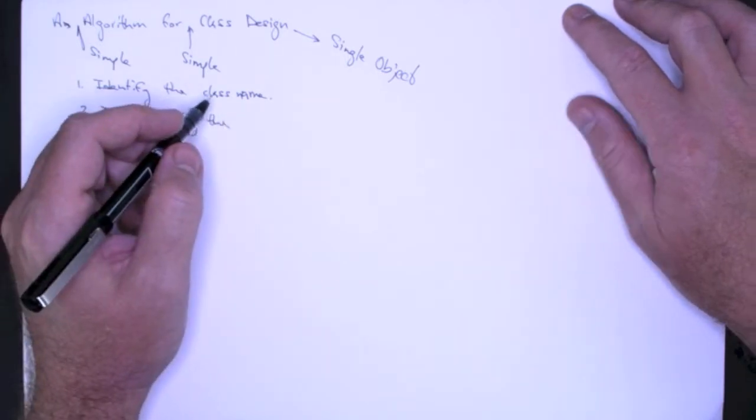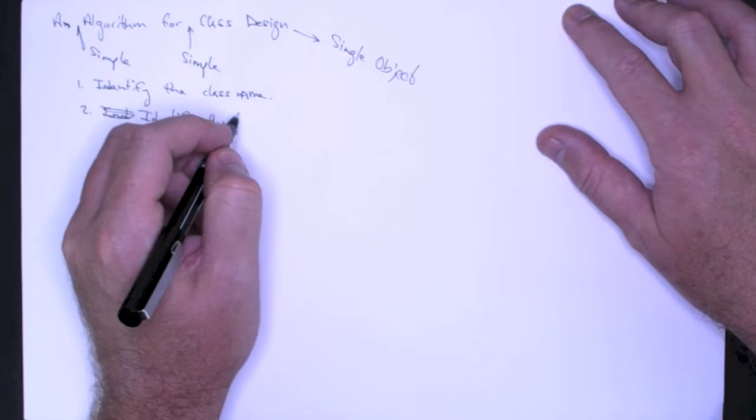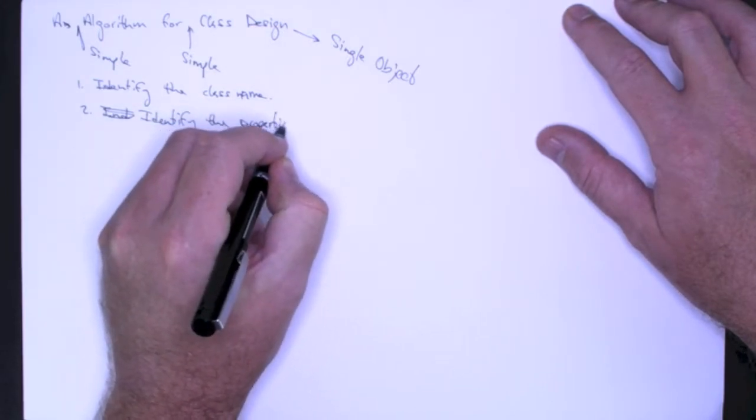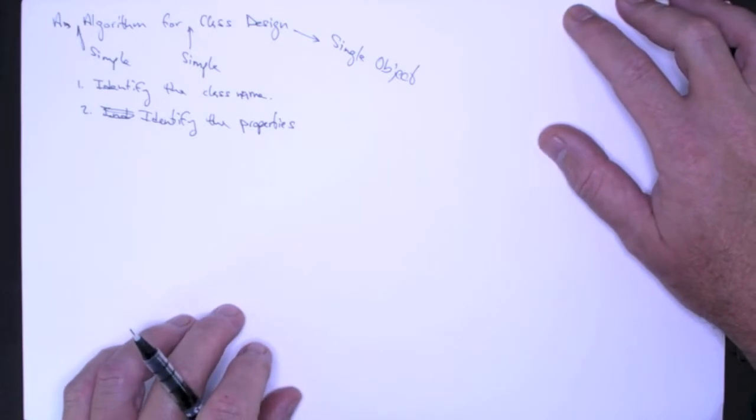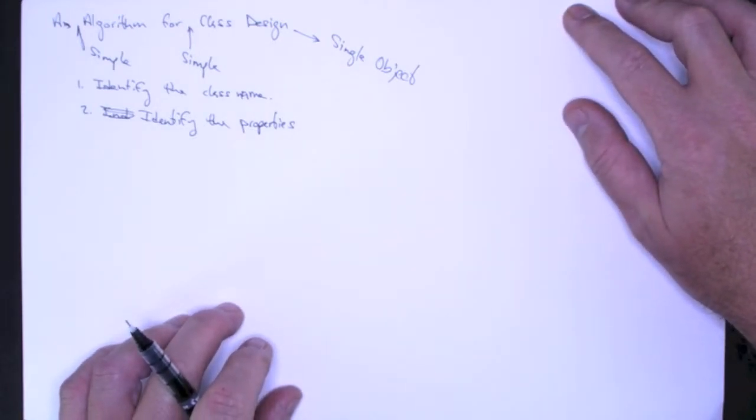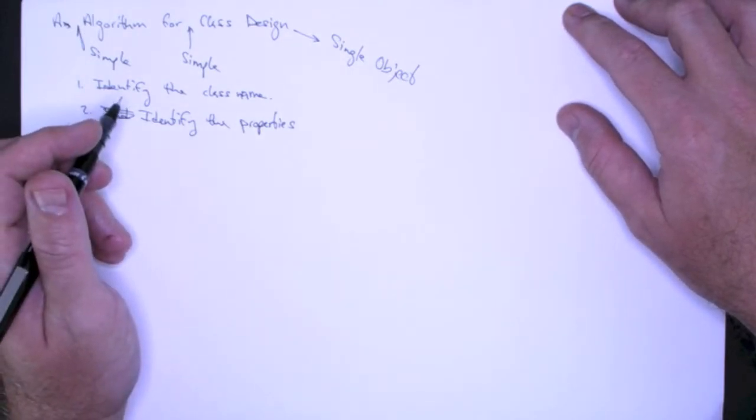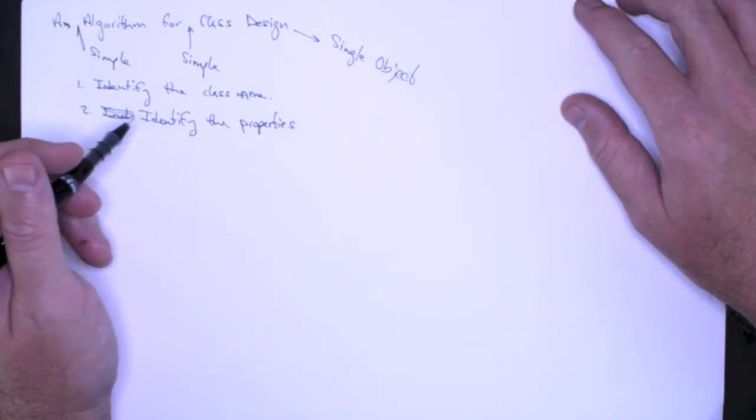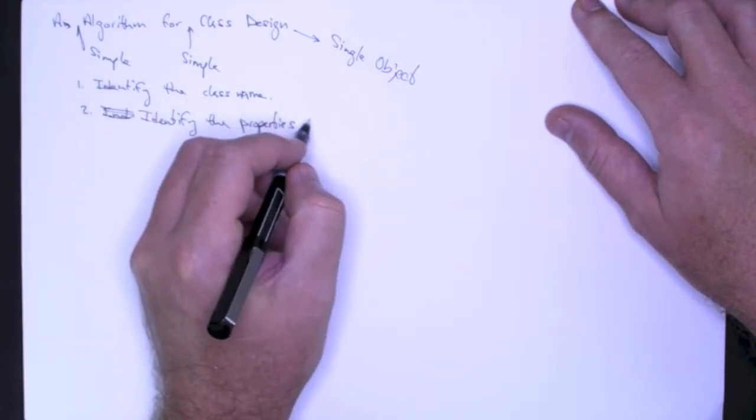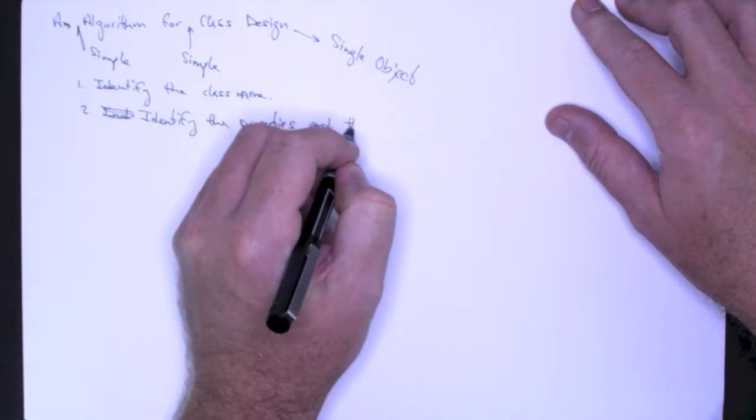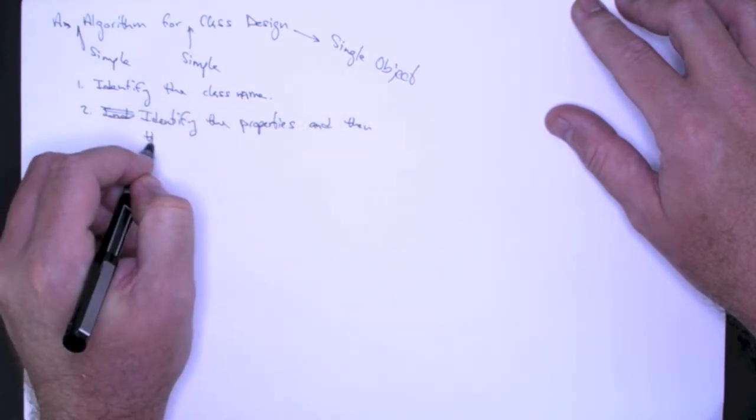The properties, the attributes, the data members, and maybe we should distinguish between properties that the object in the real world has, and then the data members with which we're going to represent information about those properties. So identify the properties and then the appropriate data members.